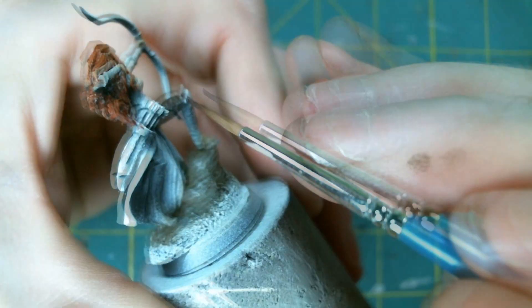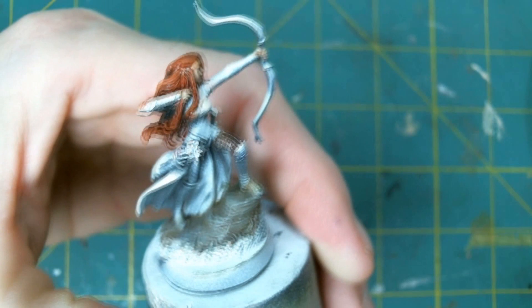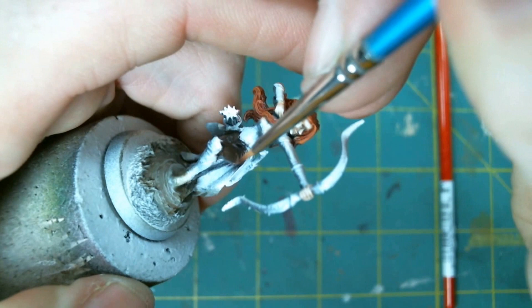Now for the actual leather, so that I did with Vallejo Game Color Beastie Brown, followed with a brown wash. And then I did a kind of a combination of dry brush and layering of Vallejo Leather Brown.